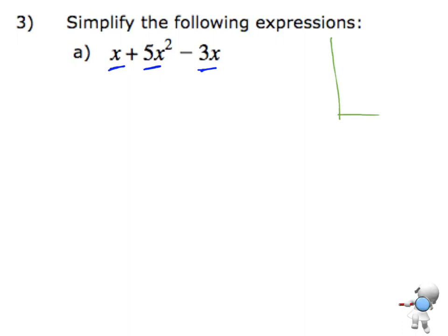So in order for something to be a like term, it needs to have the same variables and the same powers in each of those variables.